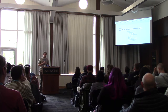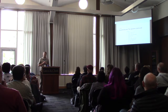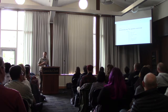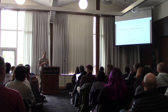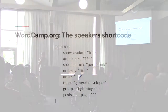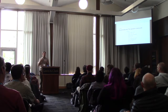Let's take a look at one of the shortcodes for WordCamp.org. Every WordCamp site has a custom post type called speakers, and so every speaker at a WordCamp event is a post — I am a post. This is a shortcode that will output all the speakers in a list or a grid on a page, and it has quite a few parameters you can use to modify what that output looks like.